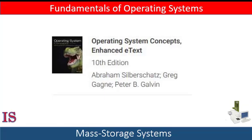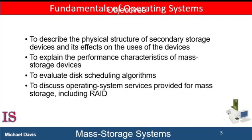We've just concluded the unit on volatile storage — the main memory or primary storage of the computer. The main mass storage system in modern computers is secondary storage, which is usually provided by hard disk drives and non-volatile memory devices such as solid-state drives.